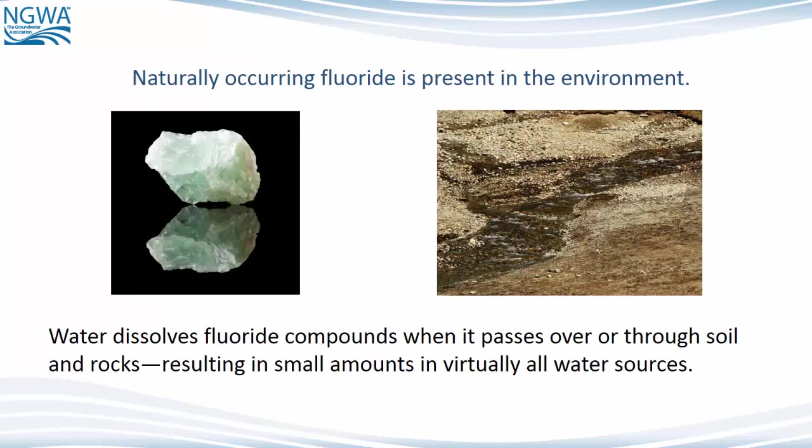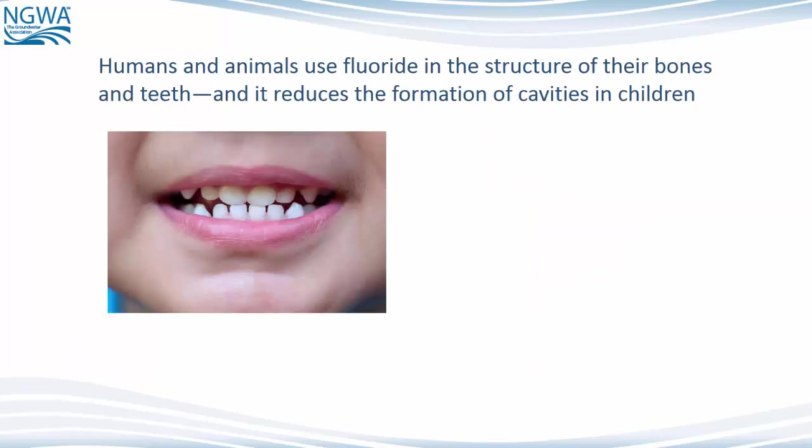Naturally occurring fluoride is present in the environment. Water dissolves fluoride compounds when it passes over or through soil and rocks, resulting in small amounts in virtually all water sources. Humans and animals use fluoride in the structure of their bones and teeth, and it reduces the formation of cavities in children.